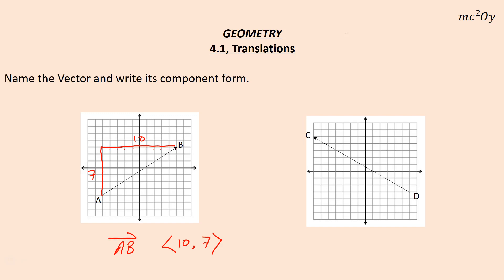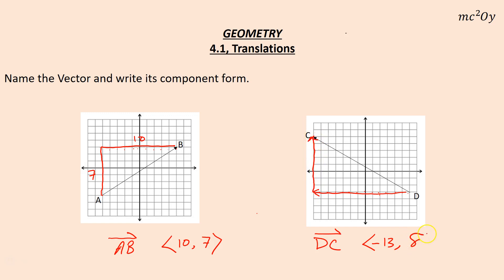Component form on this one: notice we're actually moving from D to C this time, so D to C is our vector. Our horizontal component — we're going back 13, so negative 13. And then we're going up 8 for our vertical component. So the component form is ⟨-13, 8⟩.